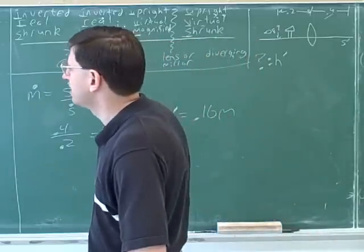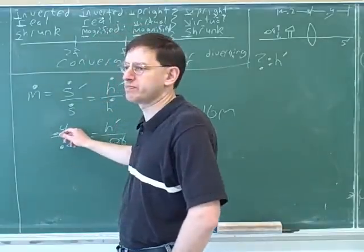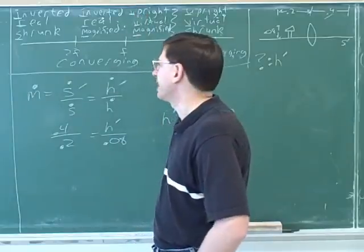well, they told us that the image distance is greater than the object distance, so we know it's magnified. But that means we could be in either of these two regions there. So we can't really tell whether it's inverted or upright.